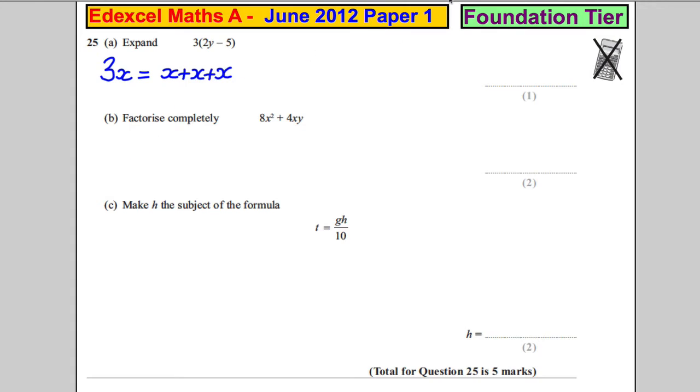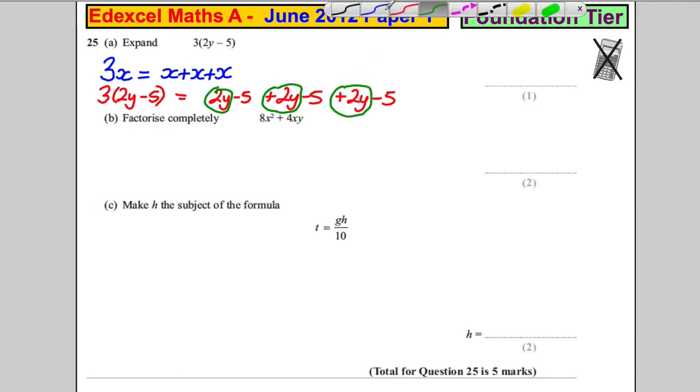Okay? So, similarly, what would 3(2y - 5)'s mean? Well, it would mean a (2y - 5) added to a (2y - 5) added to a (2y - 5). Right? And what have we got? Well, we've got a 2y, add another 2y, add another 2y is equal to 6y.